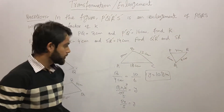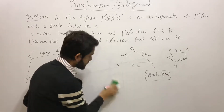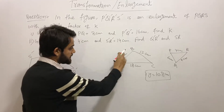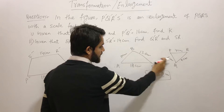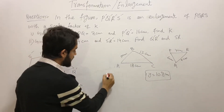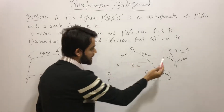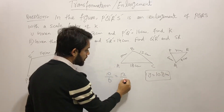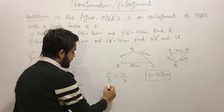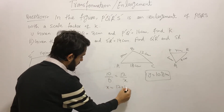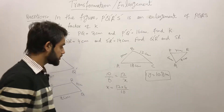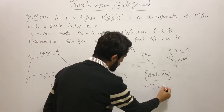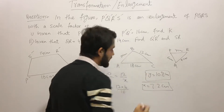To find x, we use the same concept. Taking the ratio 10 over 6 equal to 12 over x, we solve: x equals 12 times 6 over 10, which is 72 over 10, giving x equals 7.2 centimeters. These are the values of x and y found using the concept of similar figures.